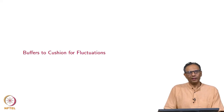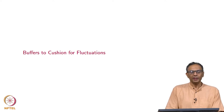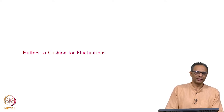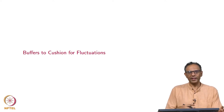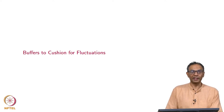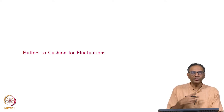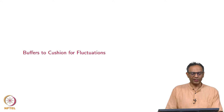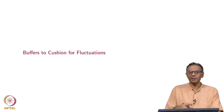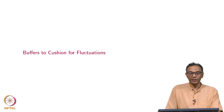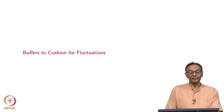This topic or lecture is called Buffers to Cushion for Fluctuations. Uncertainty, risk, and variability are different ways of explaining things that you did not expect to happen. How do you manage when there is that kind of fluctuation? We are going to use what is called Buffers to Cushion for Fluctuation. This topic is from the book Factory Physics by Wally Hopp and Mark Spearman — a wonderful book I would recommend reading.